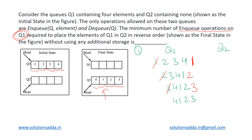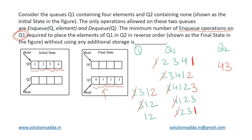Now we dequeue 4 and enqueue it into Q2 instead of Q1, so Q1 now has 1, 2, and 3. Next, we dequeue 1 and enqueue it back into Q1 — the fourth NQ operation — giving us 2, 3, and 1. We dequeue 2 and enqueue it back — the fifth NQ operation — giving us 3, 1, 2. Then we dequeue 3 and enqueue it into Q2, so Q1 now has 1 and 2.